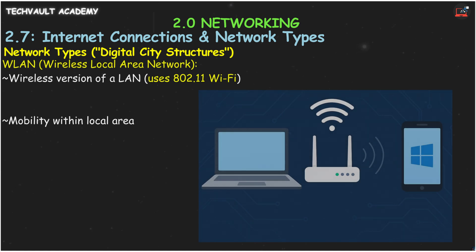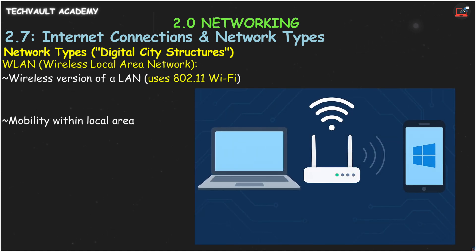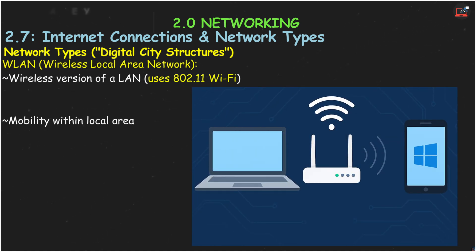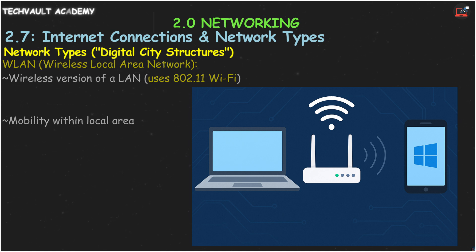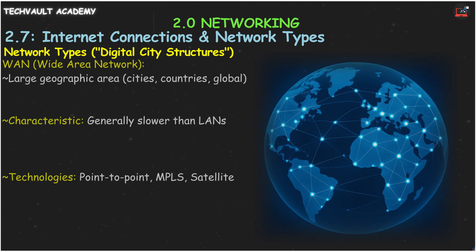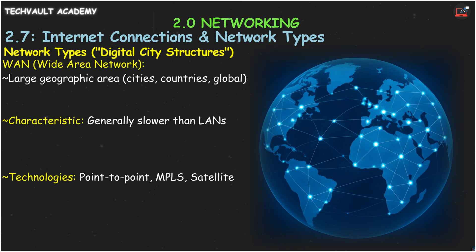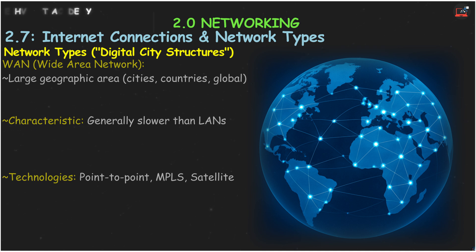A WLAN, Wireless Local Area Network, is simply the wireless version of a LAN, using 802.11 Wi-Fi technology to connect devices without cables within that local area. A WAN, Wide Area Network, connects networks over large geographical distances — cities, states, or even globally. Think of the internet itself as a massive WAN. WANs are generally slower than LANs due to the distances involved.